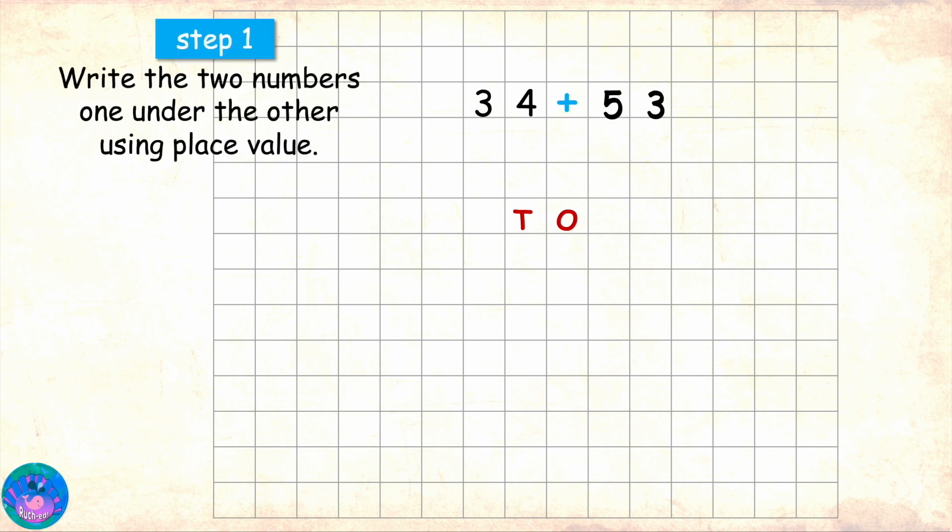We will start with writing the two numbers one under the other using place value. Both the numbers have two digits. As we have already learnt in earlier classes, the last digit of a number is the ones digit and the one before it is the tens digit. The T and O here stand for tens and ones. In 34, the ones digit is 4 and the tens digit is 3. So we will accordingly write 34 under T and O. We also have to write 53 under 34. In 53, 3 is the digit in ones place and 5 is the digit in tens place. So let us write it accordingly under 34.